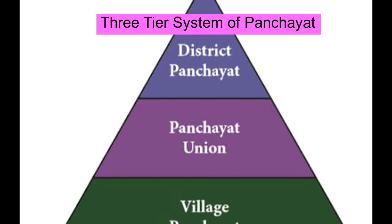Fifth, seats reserved for chairpersons of all Panchayats at all levels, also reserved in proportion to their populations. Sixth, one-third of the total number of seats reserved for women. Seventh, a uniform five-year term — local self-government elections are conducted once every five years. These are the important features of the 73rd and 74th Constitutional Amendment Act passed in 1992.